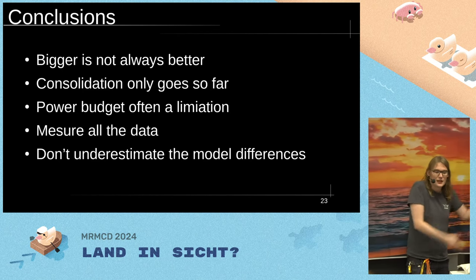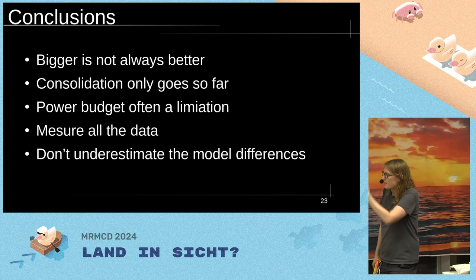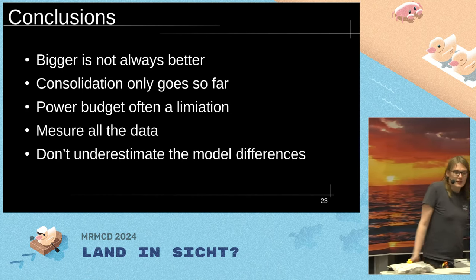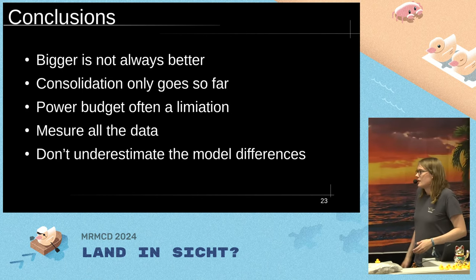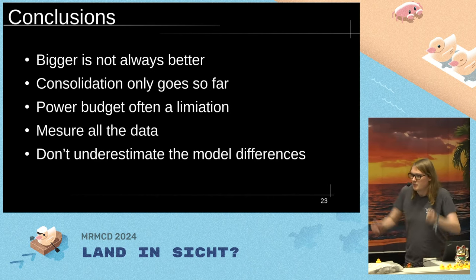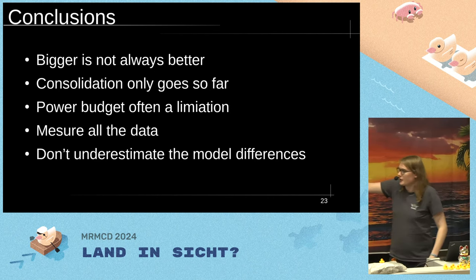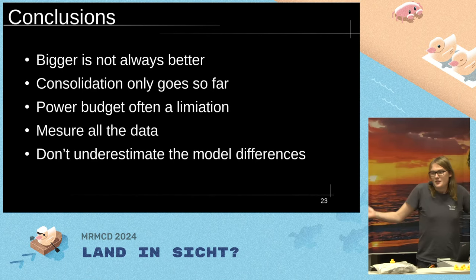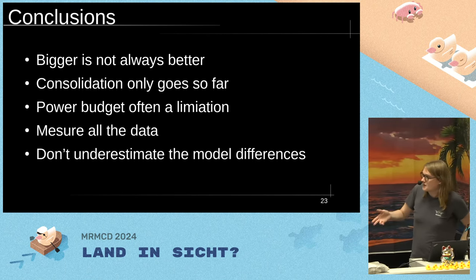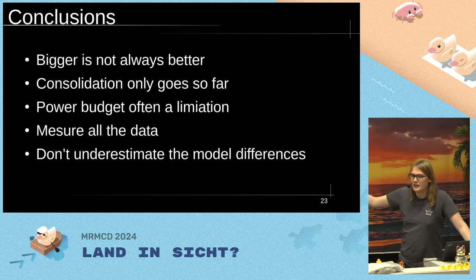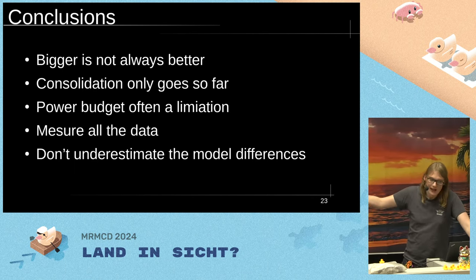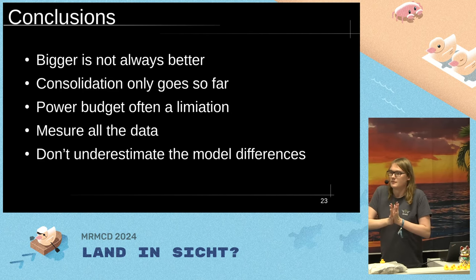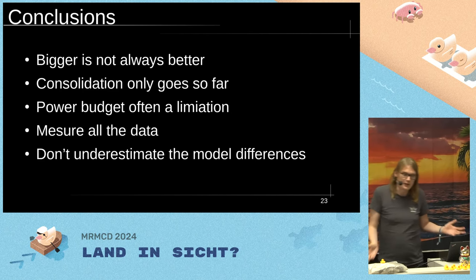In a lot of data centers, the power budget per rack is the real limitation — for example, 5 or 10 kilowatts per rack. We have a few racks at work with high-density servers where only two servers fill the entire power budget. So consolidating onto one powerful server doesn't always help. And: always measure everything. Don't underestimate the differences between vendors — compare them thoroughly before buying.